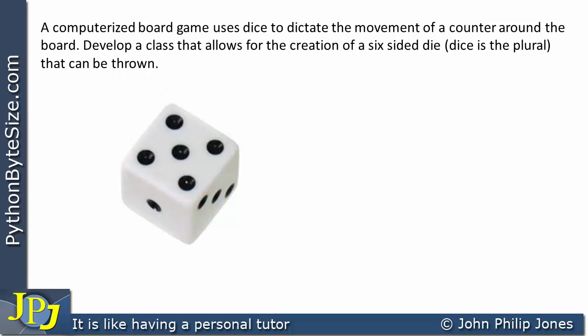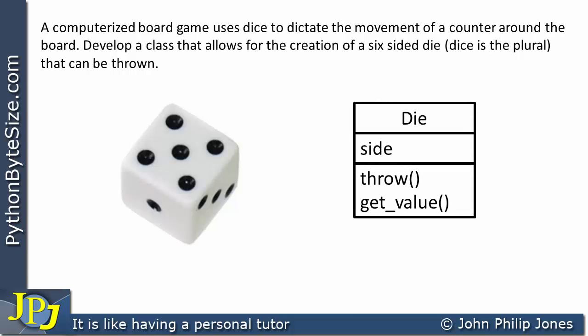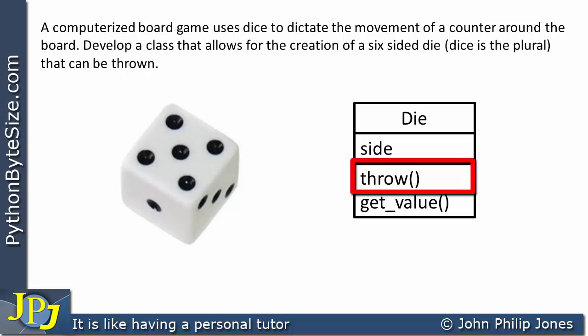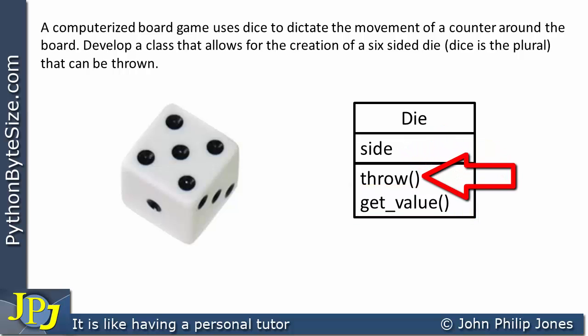The next thing is to consider what the format of a class would be to represent a die like this, and I'm going to show that with this UML-like class diagram. The class will be called 'die'. I'm going to have an attribute called 'side', which will hold whatever side is pointing up. And considering the behaviours of a die, we know it can be thrown, so I'll have a method called 'throw', and also a 'get value' method which returns the side pointing up after it's been thrown.